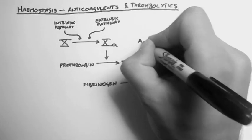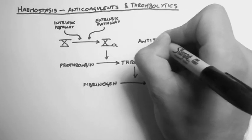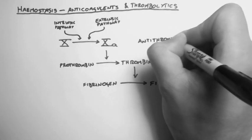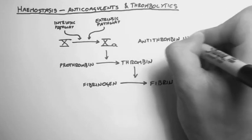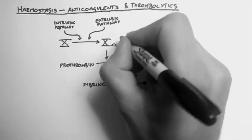The first one is an endogenous compound, meaning present in the body, known as antithrombin 3, and it's an inhibitor of 10a.